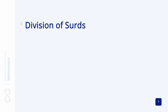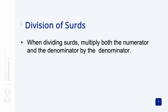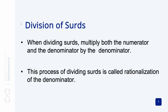Let's now look at the division of surds. When you are dividing surds, multiply both the numerator and the denominator by the denominator. This process is called the rationalization of the denominator. Let's go into it a little bit further so that you can understand.